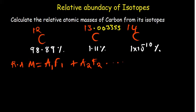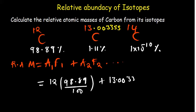Let's perform the calculation. For carbon-12, the percentage is 98.89 over 100, plus 13.003355 multiplied by 1.11 over 100. So grab your calculator: 12 multiplied by 98.89 divided by 100, plus 13.003355 multiplied by 1.11 divided by 100.